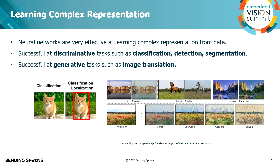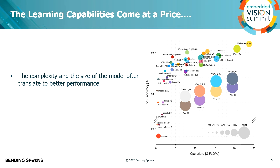They're also successful at generative tasks like image translation, super-resolution, and all other tasks where you have to create new pixels. This learning capability comes at a price — the complexity and size of the model often translate to better performance.